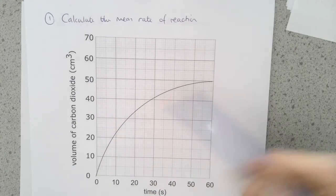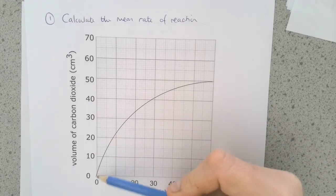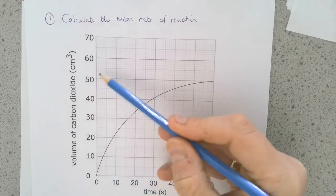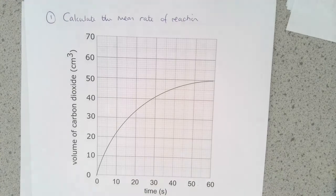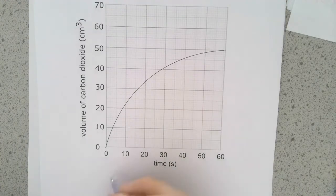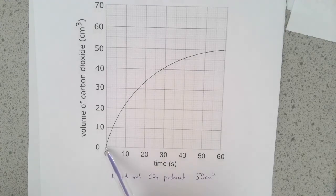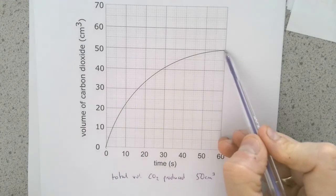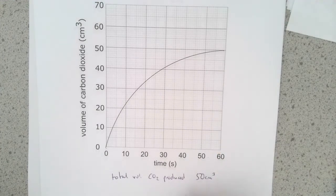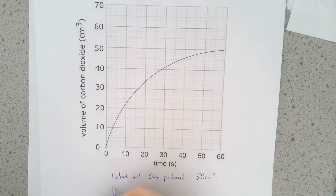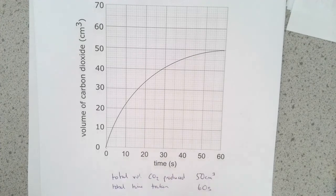So the graph starts here and it ends there. The total amount of carbon dioxide being produced is 50 cubic centimeters. So we can write that underneath. Total volume of carbon dioxide produced is 50 cubic centimeters. And the time it took to do that was from zero at the beginning until it just became flat there, which is 60 seconds. So total time taken is 60 seconds.